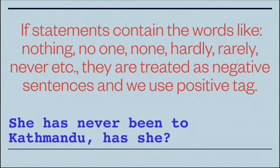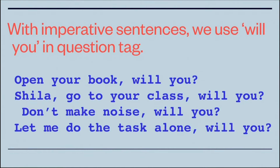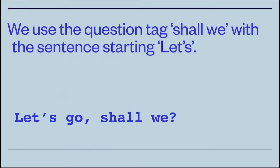For example, 'She has never been to Kathmandu' — the tag will be 'has she.' With imperative sentences, we use 'will you' in the question tag. For example, 'Open your book, will you?' — the sentence starts with a direct verb, so it's imperative. Even when there is a name like 'Sila, go to your class,' it's still a command, so the tag is 'will you.' Even for negative imperatives like 'Don't make noise, will you,' the tag is still 'will you.'